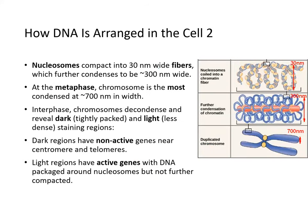Nucleosomes compact into chromatin fibers about 30 nanometers in diameter, which further condense to about 300 nanometers. At metaphase, when chromosomes are most condensed, the width is about 700 nanometers. During interphase, chromosomes decondense, revealing dark-staining regions with non-active genes near the centromere and telomeres, and light-staining regions with active genes packaged around nucleosomes but not further compacted.